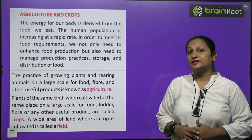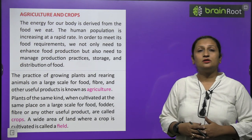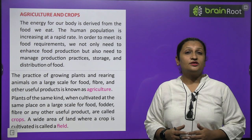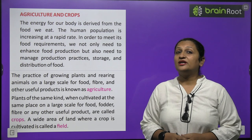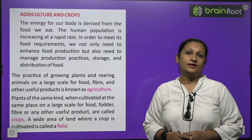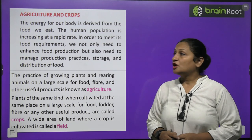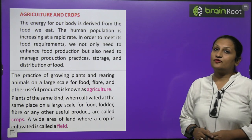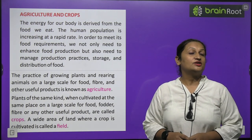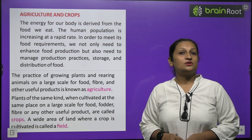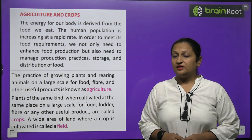Now, agriculture practices. India is an agricultural country. Why do we do agriculture? Just to obtain food. We have to eat food and we have to eat crops first. This is why we do agriculture. The energy for our body is derived from the food we eat. If we don't eat food, our body will not get energy, because food is oxidized inside our body.